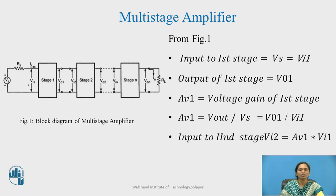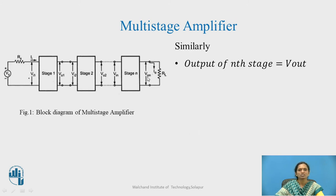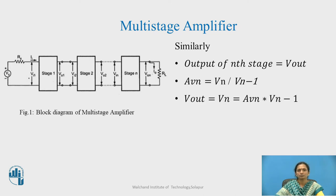Keep in mind we have to calculate the gain which is serving some load. The output of the nth stage is V_out. We can say A_Vn equals V_n upon V_{n-1}, where V_n is the output voltage of the nth stage and V_{n-1} is the input to the nth stage — the output of the previous stage. Therefore, V_out equals V_n equals A_Vn into V_{n-1}. Once you know the value of the load, you can calculate the voltage at that point and get the overall gain of the amplifier.